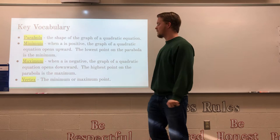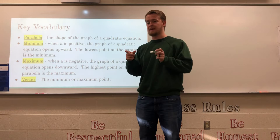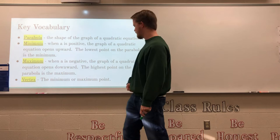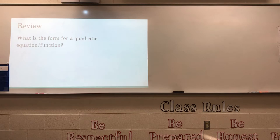When a is negative, the highest point on the parabola is the maximum. We're going to talk about how to find these maximum and minimum points because on the state test they ask a lot about zeros — where the parabola crosses the x-axis — and the minimum or maximum. The actual point itself is called the vertex.